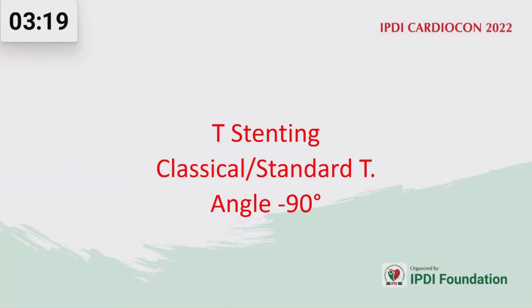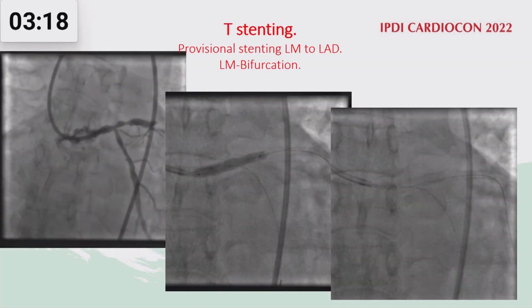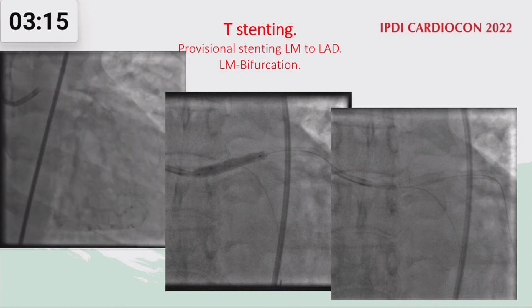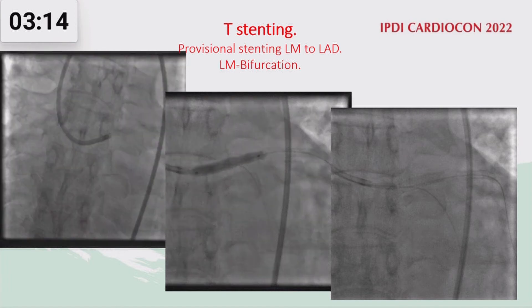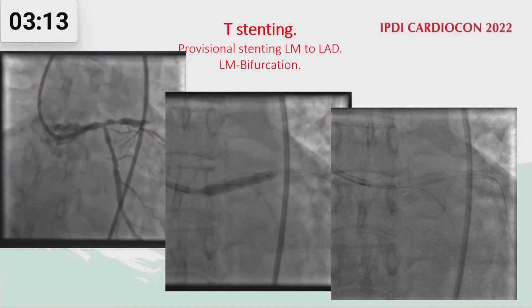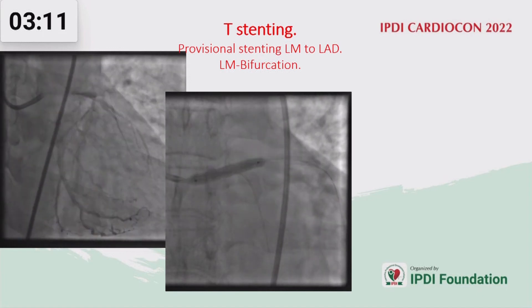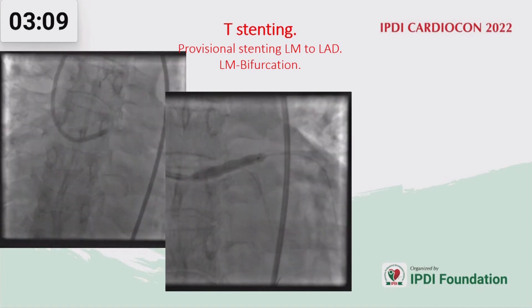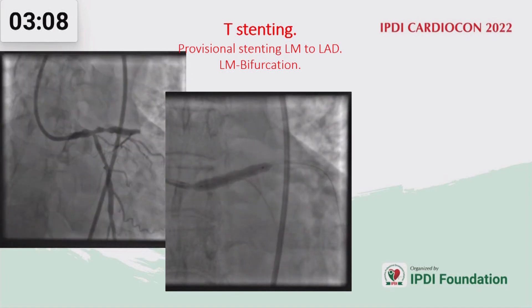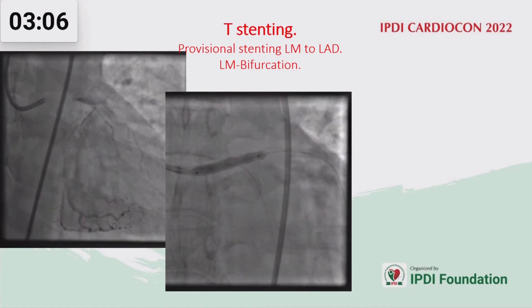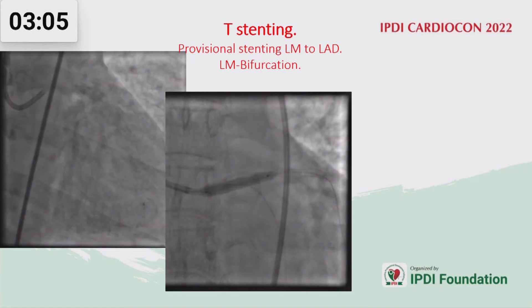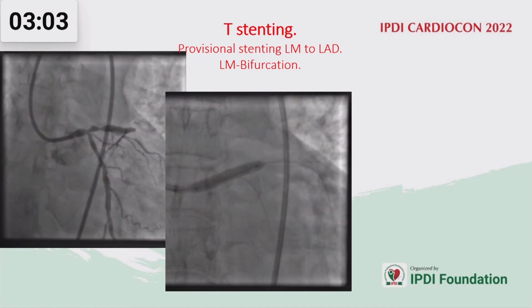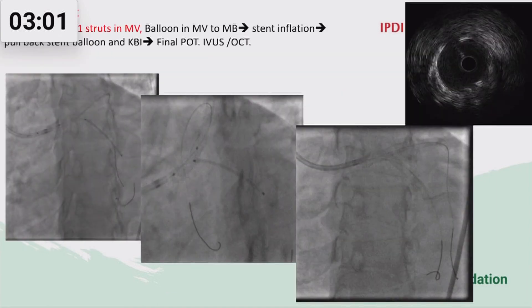This is an example of classical T stenting when the angle is 90 degrees — a left main bifurcation. It is rarely seen like this. Sometimes, even in a 90 degree angle, when the wire is put in the LCX, the angle becomes less.